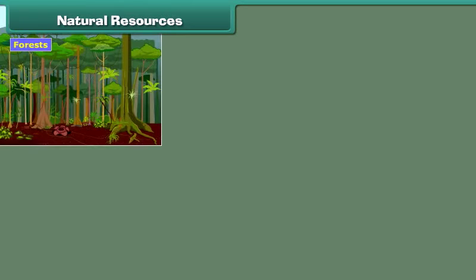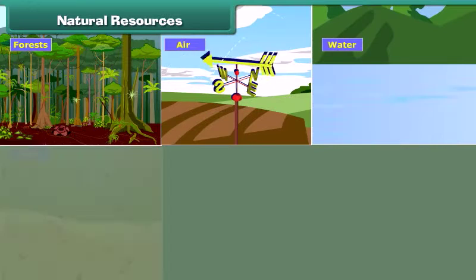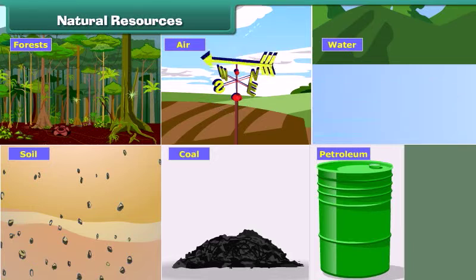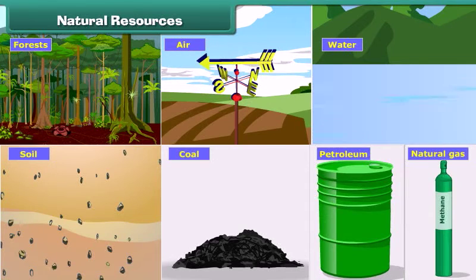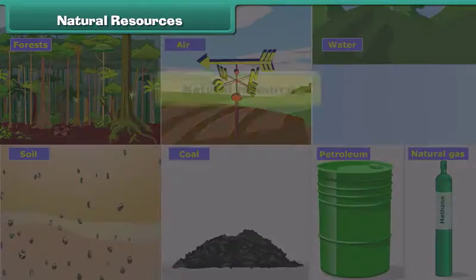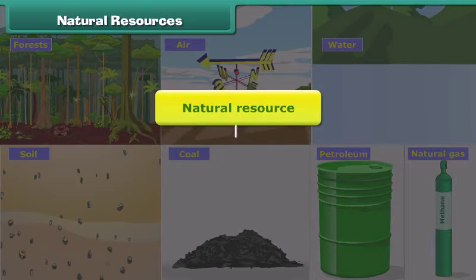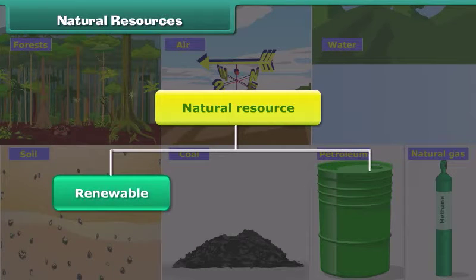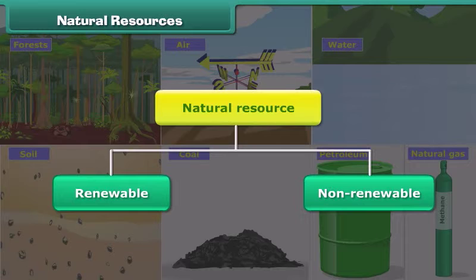A natural resource is a stock of material given to us by nature for use. It is not created by human beings. Natural resources are of two types: renewable and non-renewable.